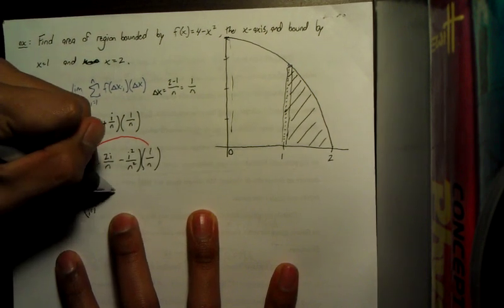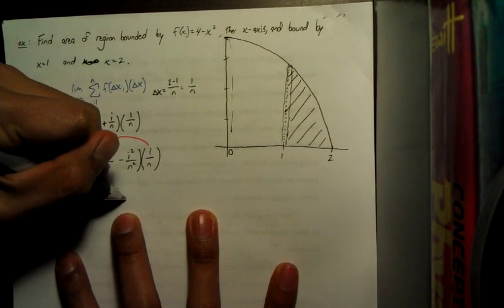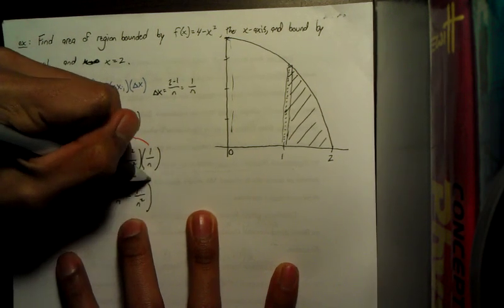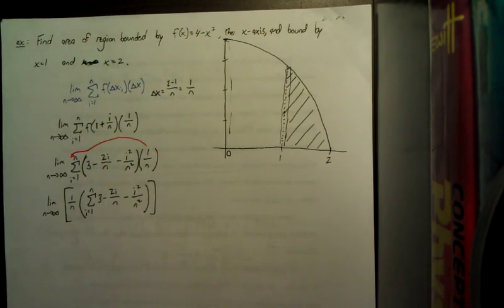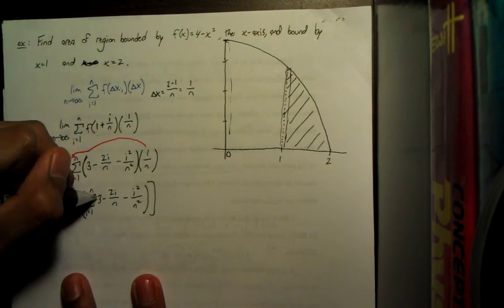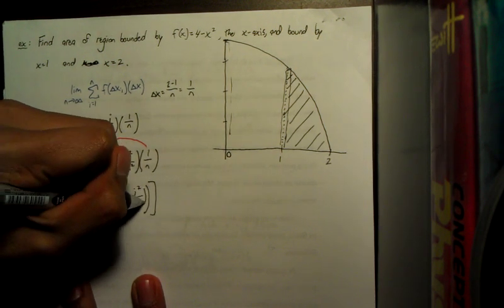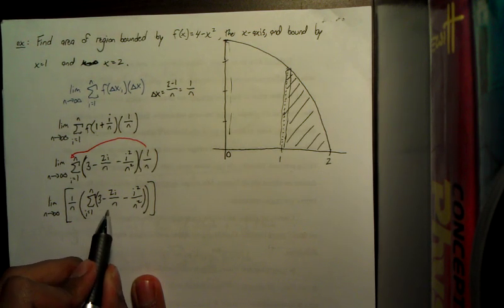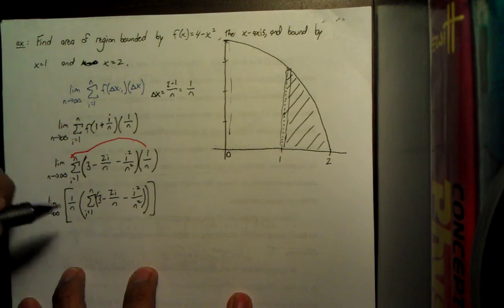Times, so now we've got our summation, i equals 1 to n of 3 minus 2i over n minus i squared over n squared. When you have the summation of something with more than one term, you can split it up.